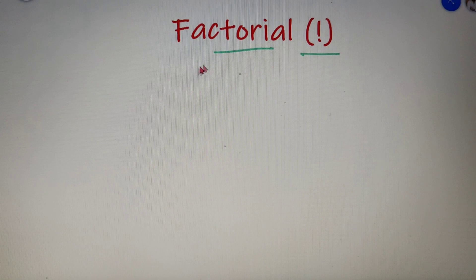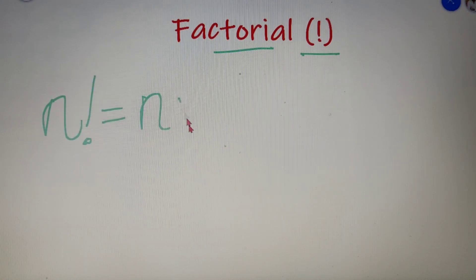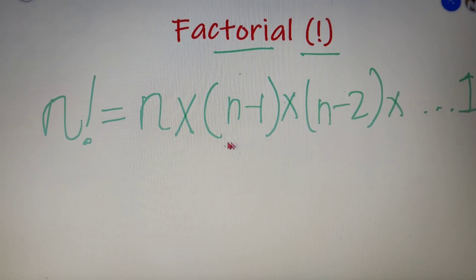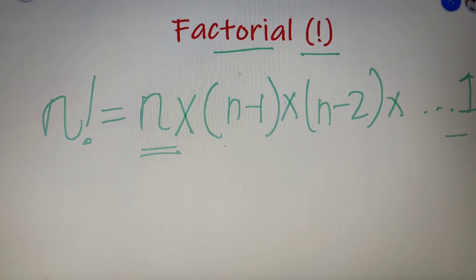Now factorial of a number is nothing but the product of all the numbers from that number to 1. So suppose if we have n factorial, then the value of n factorial is equal to product of all the numbers from n to 1. So we will go from n to n minus 1 to n minus 2 and all the way up to the number 1.